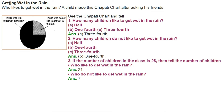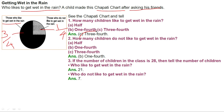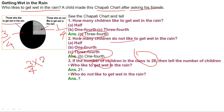Who likes to get wet in the rain? A child made this chapati chart after asking friends. Three-fourths (3/4) of the children like to get wet in the rain, and one-fourth (1/4) do not like to get wet. How many children like to get wet? — Three-fourths. How many do not like? — One-fourth. If the number of children in the class is 28, then: 3/4 of 28 = 21 children like to get wet; and 1/4 of 28 = 7 children do not like to get wet in rain water.